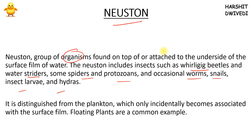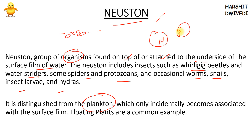What are neuston? These are organisms found on the surface film of water — either on top of the surface film or on the bottom of the surface film. They are found on top of or attached to the underside of the surface film of the water. One thing you should always keep in mind: these are not planktons. Planktons do incidentally come to the surface of the water, but planktons and neuston are different categories. Floating plants are an example of neuston, not plankton. For example, lotus and some other flowers and plants in the aquatic ecosystem are floating plants and belong to the category of neuston.